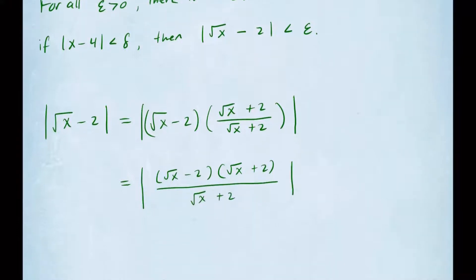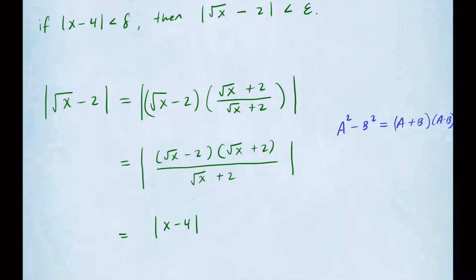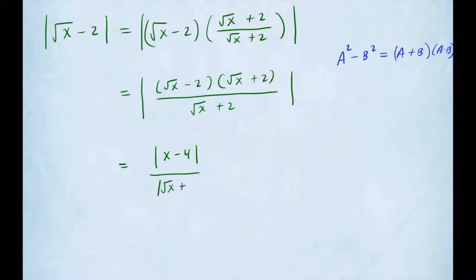Now on the numerator, continue to distribute so you'll have the absolute value of x minus 4, because when you expand this you're going to get a difference of two perfect squares. From algebra we know this formula: a squared minus b squared equals (a plus b) times (a minus b). So you get x minus 4 in absolute value, and on the bottom we can write that as the absolute value of square root of x plus 2.